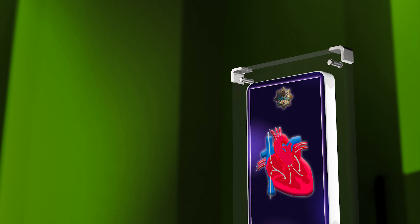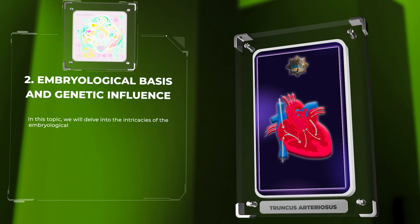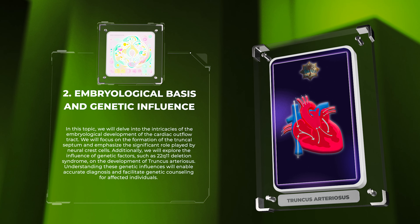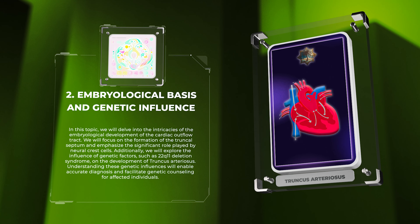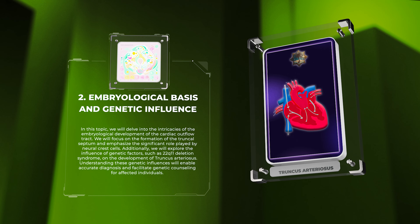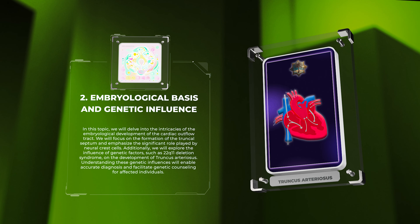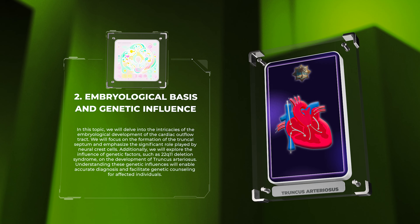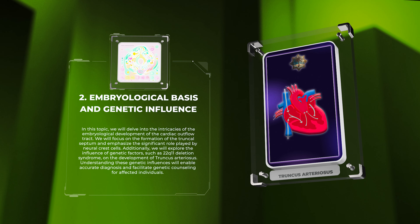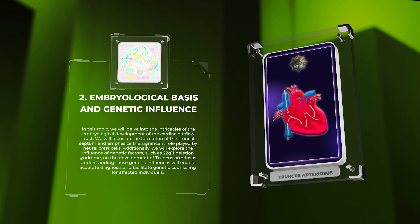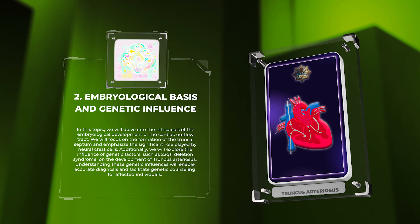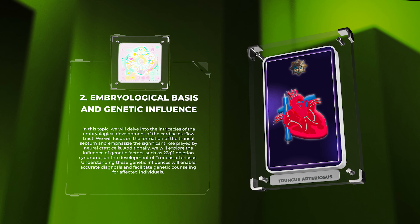In this topic, we will delve into the intricacies of the embryological development of the cardiac outflow tract. We will focus on the formation of the truncus septum and emphasize the significant role played by neural crest cells. Additionally, we will explore the influence of genetic factors, such as 22q11 deletion syndrome, on the development of truncus arteriosus. Understanding these genetic influences will enable accurate diagnosis and facilitate genetic counseling for affected individuals.